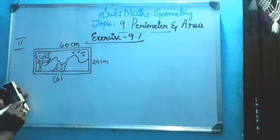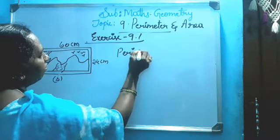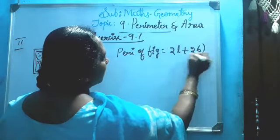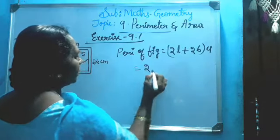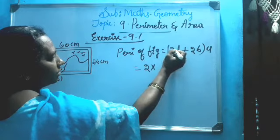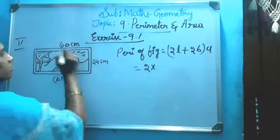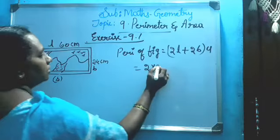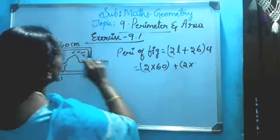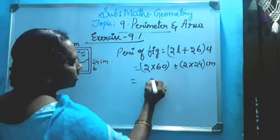The second figure: same perimeter of figure equals 2 into length plus 2 into breadth. Two times length - the length is 4 meters. Two into 4 meters plus breadth is 2.10 meters.